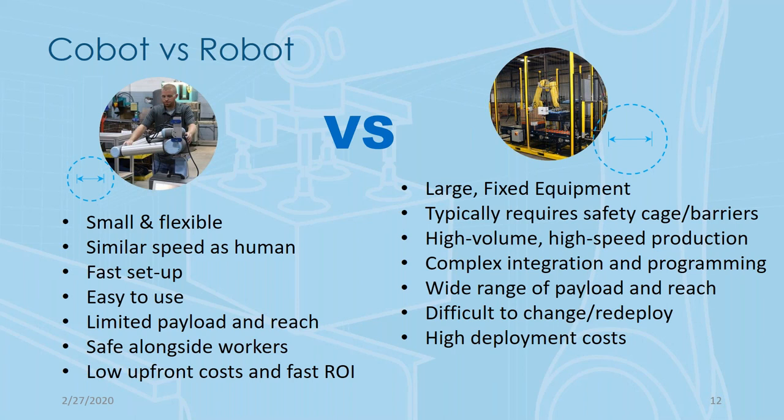Comparing cobots versus traditional robots: you can see one gentleman pushing his collaborative robot on a cart, able to move it from one cell to another as work conditions and workforce needs dictate. By contrast, traditional robotics typically involve large fixed installations with safety guarding or a dedicated cell — not only making them fixed but also increasing the investment required.